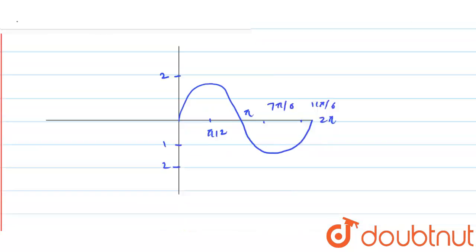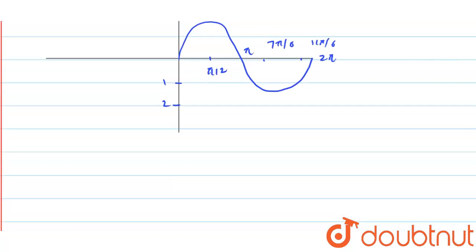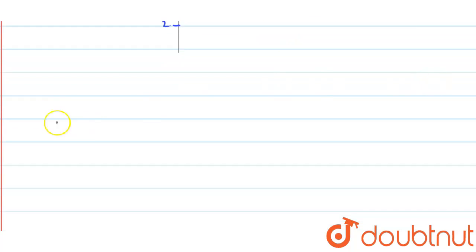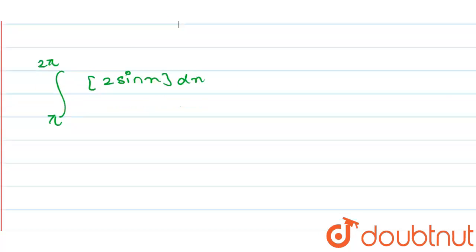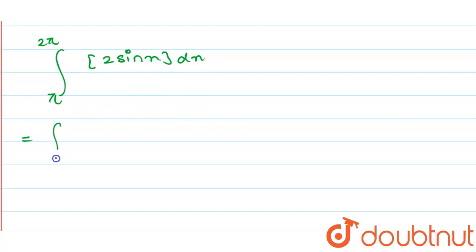It can be broken into these parts. So you are given that you have to find the value of integration of pi to 2 pi, the greatest integer function 2 sin x dx here.